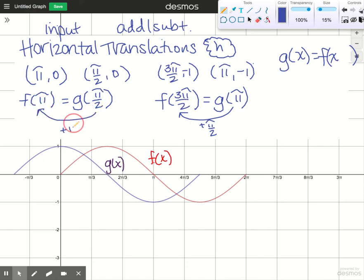From pi over two to pi, I have to add pi over two. So if I know what is the input of g, I know g of x. To get the input here on f to see what's missing, I would add pi over two. So g of x equals f of x plus pi over two.